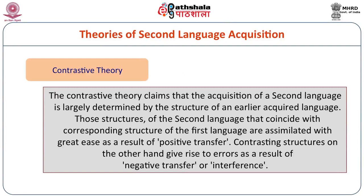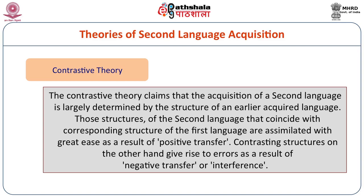Contrastive theory claims that acquisition of a second language is largely determined by the structure of an earlier acquired language — the native language or mother tongue. Structures of the second language that coincide with the first language are assimilated with great ease through positive transfer, while contrasting structures give rise to errors through negative transfer or interference. Identity theory is contrasted with contrastive theory and asserts that the availability of one language has little or no influence on the acquisition of another, stating that first and second language learning are basically one and the same process governed by the same law.